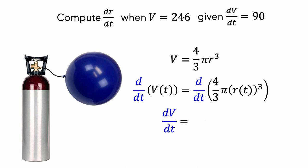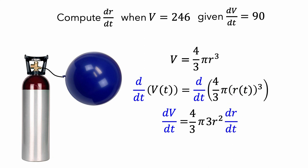On the right side of the equation, we'll keep the constant four-thirds pi. Then, since we're thinking of r as a function of t, we'll need to use the chain rule. We'll take the derivative of the outside function, so 3r squared, and then multiply this by the derivative of the argument. We can cancel the threes, which leaves us with 4 pi r squared times dr/dt on the right side of the equation.